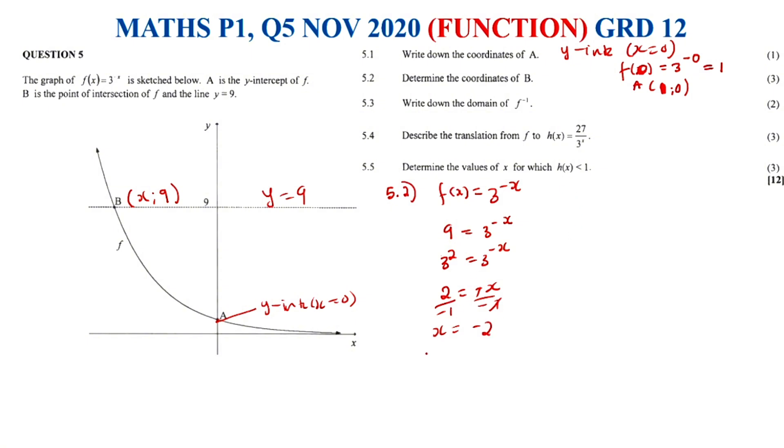Divide both sides by negative 1. Negative would cancel out. Therefore x equals minus 2. Therefore this brings us to the conclusion to say that the coordinates of B, it's (-2, 9). And that's how you would deal with 5.2.